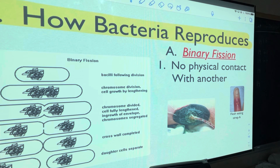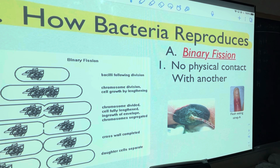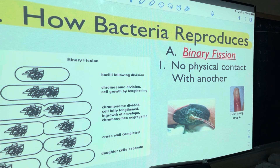If you remember from yesterday, if you had one bacteria it went to two in 9.8 minutes. Now to be tricky — if you had two bacteria and the time it takes them to go to four, people would say 18 minutes, but it's actually 9.8. Keep that in mind. Now there are two ways they reproduce. One is called binary fission.